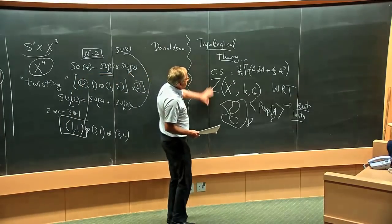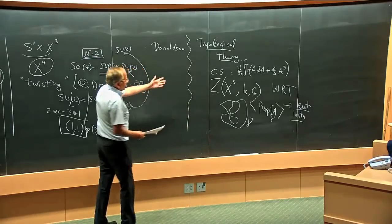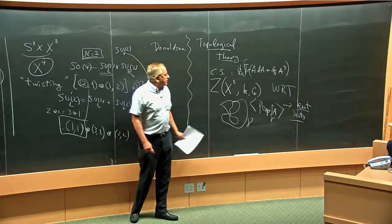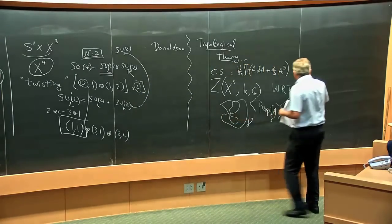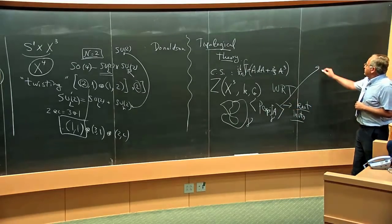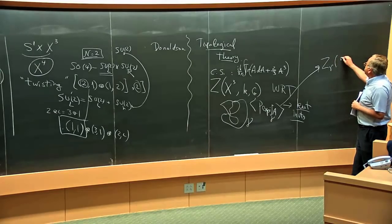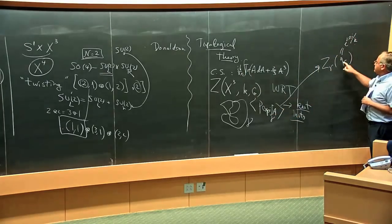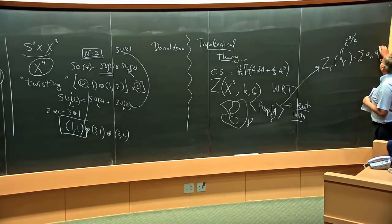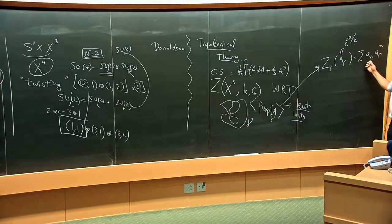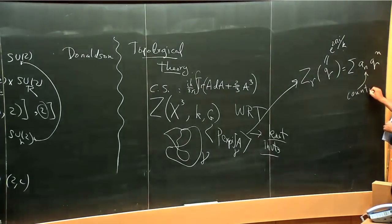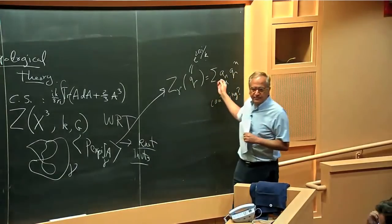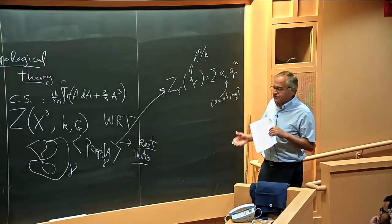So we have two different classes of topological theories: one in three dimensions with no metric in it, and the other that uses supersymmetry. A priori, these look completely disconnected. One thing noticed a while back was that if you compute these knot invariants — for example the expectation value of the Wilson line — the answer, when expanded in terms of the parameter q = e^(2πi/k), has an integer expansion. You get polynomial-type things with integer coefficients, as if you're counting something. But counting what? It was mysterious — just a partition function — why it looked like you're counting something.